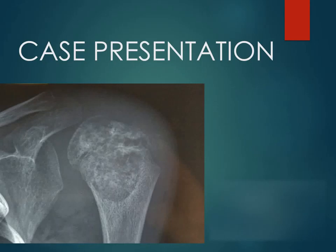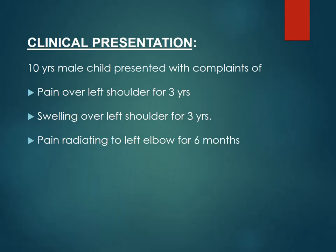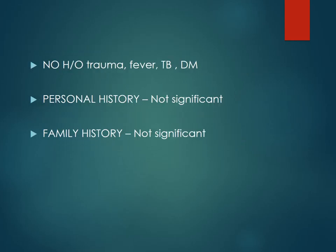We have a case today of chondroblastoma. A 10-year-old male child presented with a complaint of pain and swelling over the left shoulder for the last three years. There is also history of pain radiation to the adjacent elbow for the last six months. There is no history of trauma, fever, diabetes, or TB. History of trauma is important in any bone lesion, and fever is also important because it is used to rule out osteomyelitis.